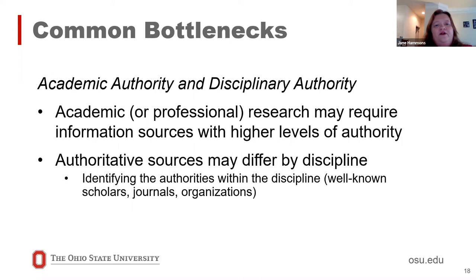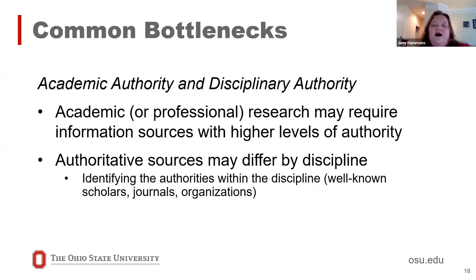Another bottleneck is academic authority — in the academic world or in professional worlds, students may need sources with different types of authority than those they use in their personal lives. Authoritative sources may also differ by discipline: what is considered authoritative in one field may not be the same in another field. As they enter that field or those professions, learning to recognize who are the authorities and what are the authoritative types of sources and places to find information can definitely be challenging.